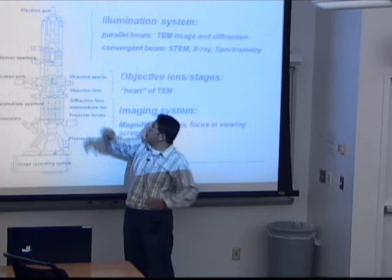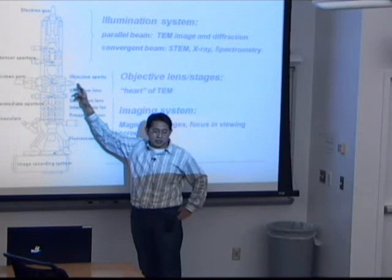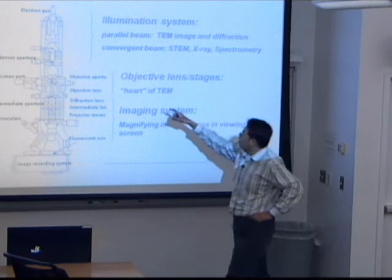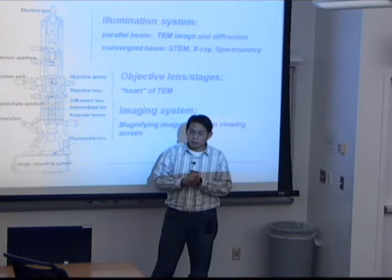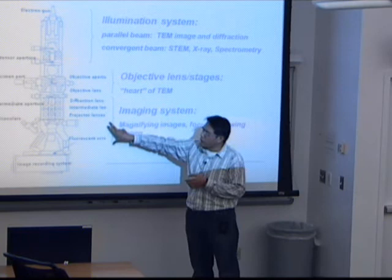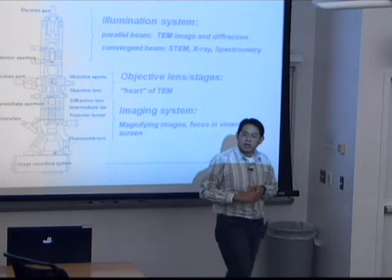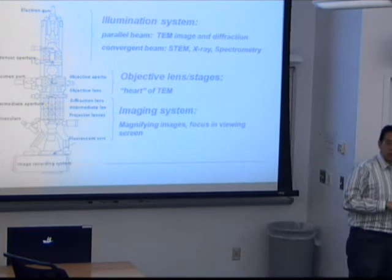The second part of the TEM is a very small part, about tenths of a centimeter deep, called the objective lens and stage. It includes the objective lens and objective aperture. It is very small but very important — it's called the heart of the TEM. Basically, in this part of the machine, you generate the images of the specimen. The third part contains many lenses: intermediate lens, diffraction lens, and projector lens. The main purpose of those lenses is magnifying the image up to a million times magnification.